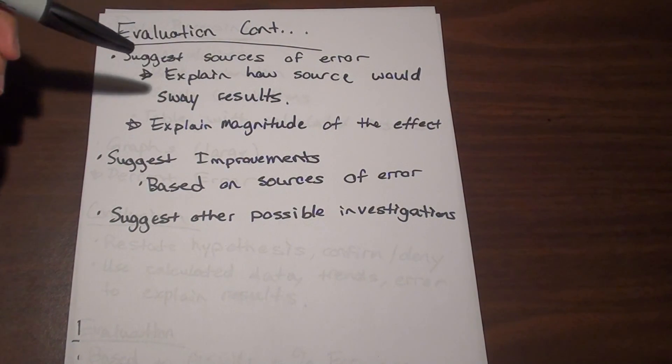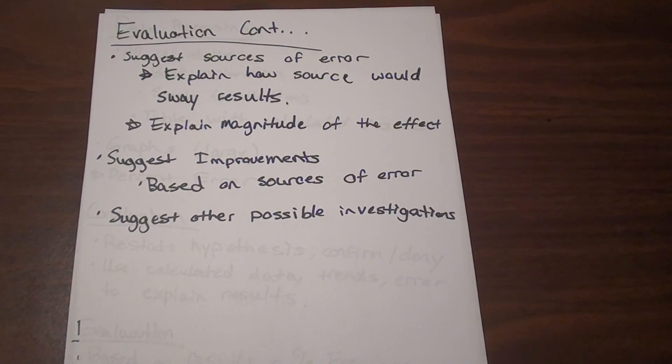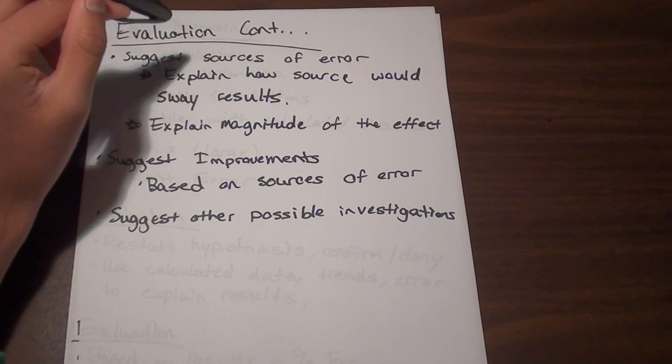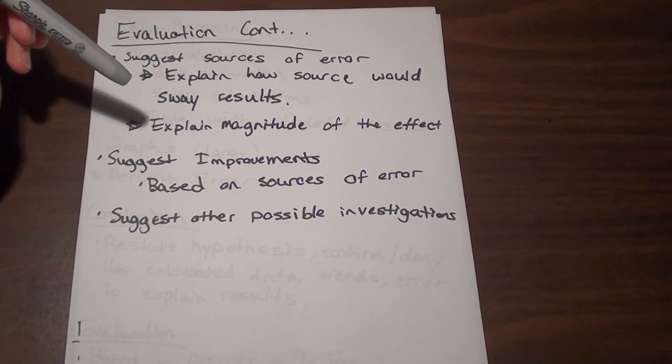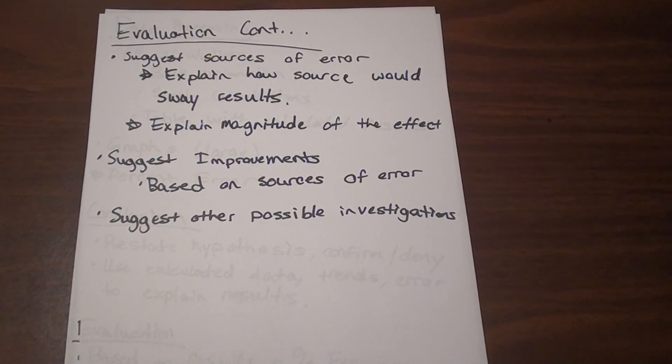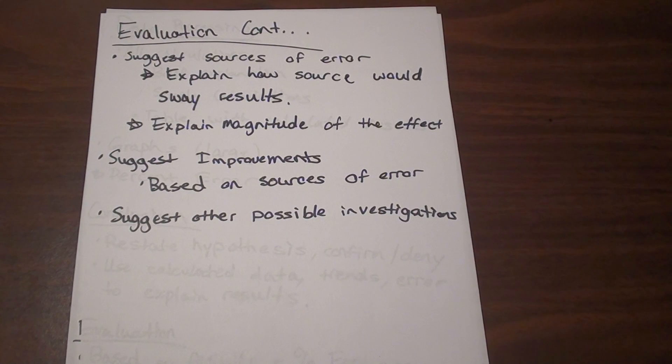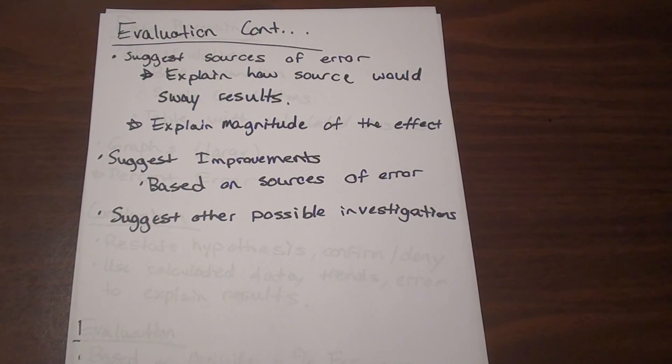You want to explain how the source of error would have swayed your result. Because if your results were way too high and you suggest a source of error that theoretically would have caused your results to be much lower than expected, then that's not really helping you there because it's kind of contradicting what your results actually were. So it's not really explaining why your results were the way that they are. So you want to make sure to explain how the source of error could have contributed to the results that you got. And then you're going to also want to explain the relative magnitude of the effect. If you have a source of error that could have thrown off an amount of a chemical by 0.1 milliliters and you're using 200 milliliters, it's not going to be that big of an effect. But if it could have affected 0.1 milliliters and you're using 0.3 milliliters, then that's 33 percent of the chemical, and obviously that's going to have a huge effect on your results.